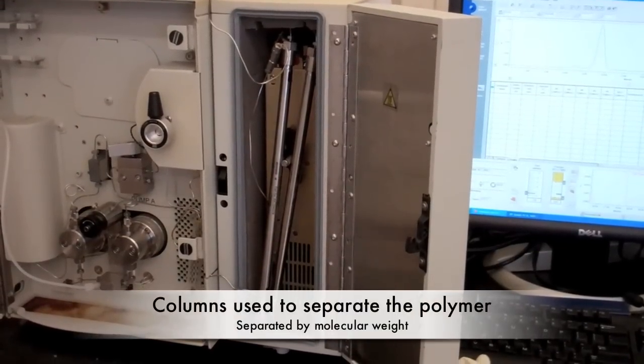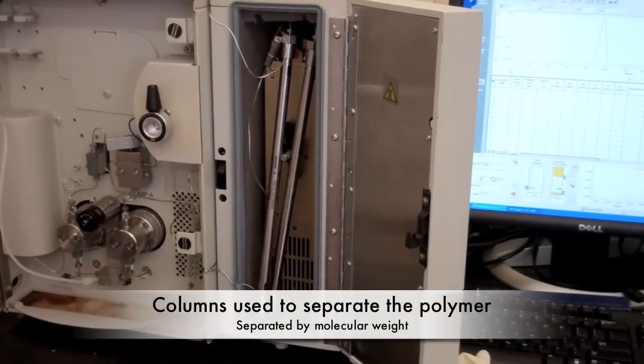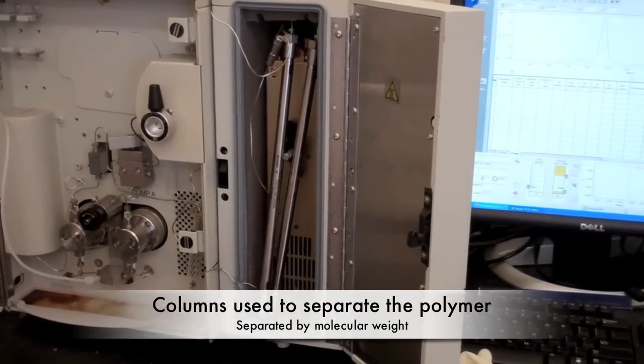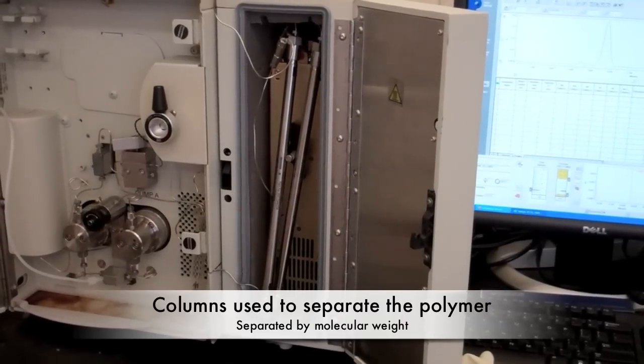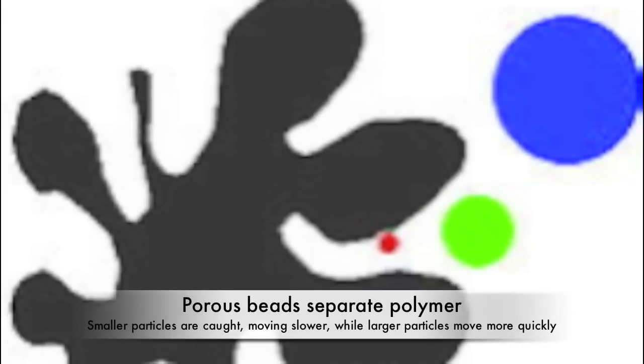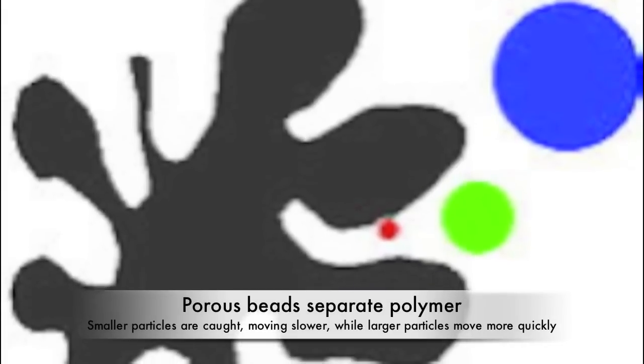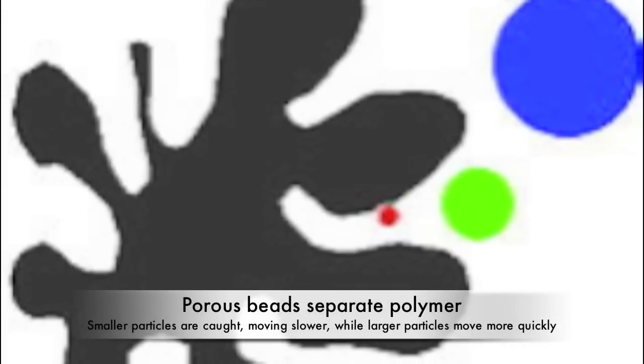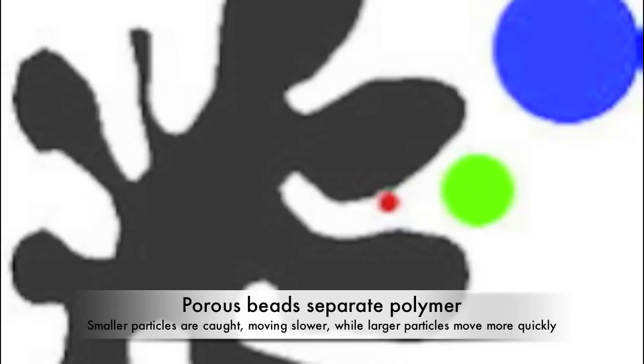The second component, the columns, is used to separate the polymers depending on their molecular weight as they are pushed through the instrument. Porous beads, typically either polystyrene or glass, are usually used to separate the polymers within the columns, causing larger polymer molecules to flow through quicker. Smaller polymer molecules are caught up in the beads and diffuse more slowly.